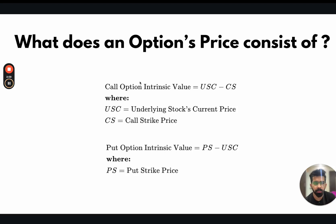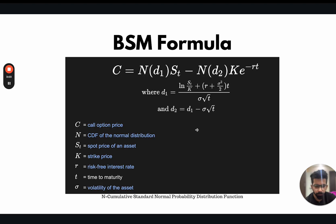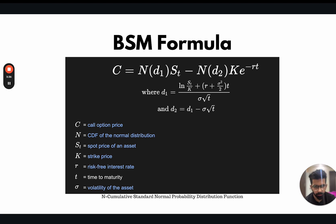Now let us understand how the option's value is actually calculated as the sum of intrinsic value and time value. This is the Black-Scholes model formula. This formula was developed by Black, Scholes, and Merton, and they received a Nobel Prize for it. It was one of the fastest-accepted formulas in all of social sciences. It has been the accepted formula for trading options for the past 30 to 40 years since it came into existence, and it also works in the cryptocurrency markets.